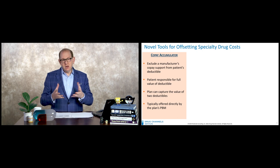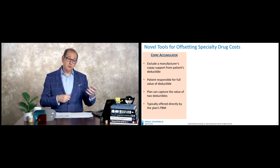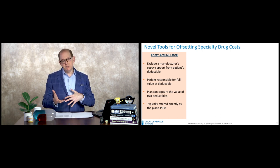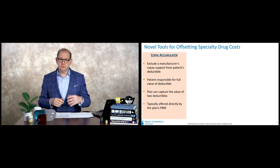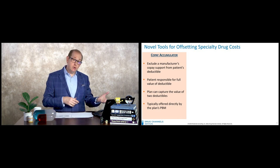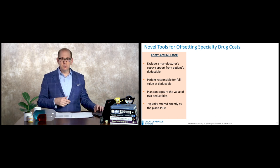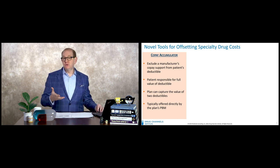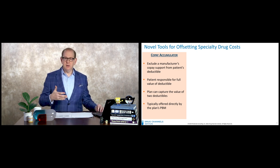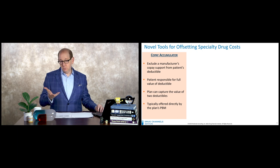These programs are typically operated by the PBM as an optional benefit that can be turned on or off within the benefit plan. Really nothing special has to be done — it's just a benefit design decision, like choosing three tiers or four tiers or five tiers, or whether you want an accumulator or no accumulator.